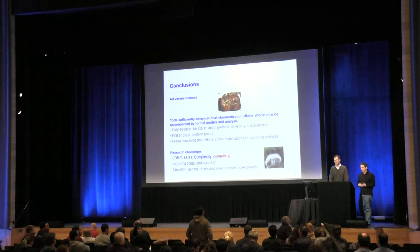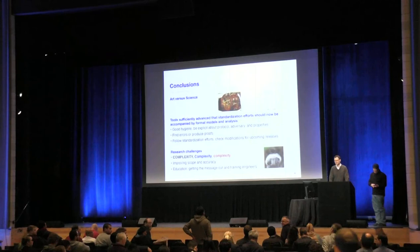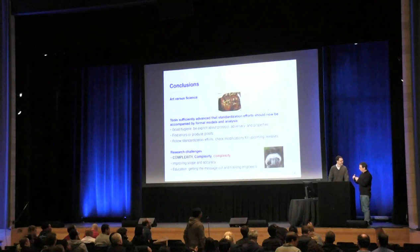Question from an audience member who uses Tamarin: how can you modify the capability of the Dolev-Yao adversary? Answer: you simply add rules. For example, for Diffie-Hellman and perfect forward secrecy, you would add a long-term key reveal rule: after a session key is established, the long-term key can be output to the network. Session state reveal is modeled similarly.